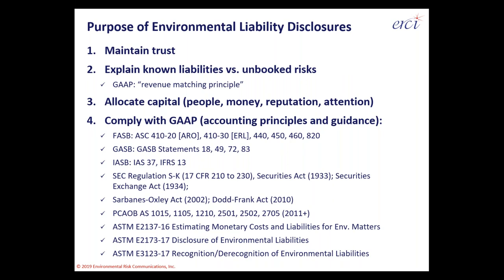The third purpose of disclosures is allocating capital better — people, money, reputation, and attention are scarce resources. Ultimately, everyone is interested in following the one set of rules we've all agreed on, which is generally accepted accounting principles. The ASTM standards serve as instructions to filers or liability holders on how to prepare for an audit, a budget, or an environmental reserve review — instructions that don't exist in FASB, which is more directed at auditors and filers.